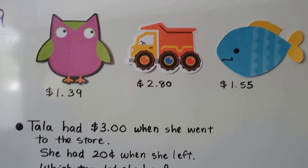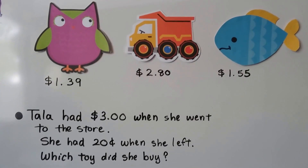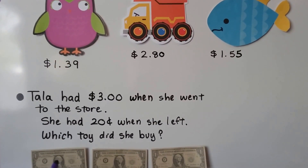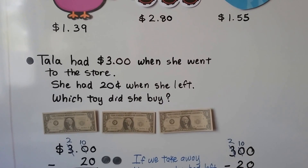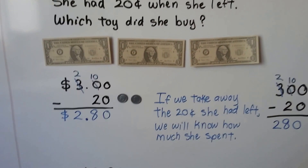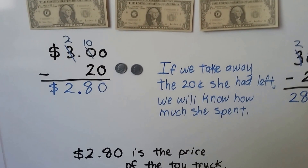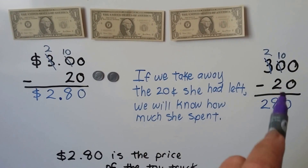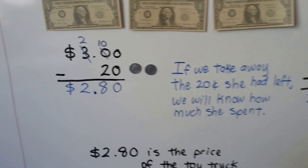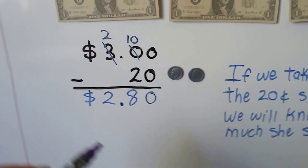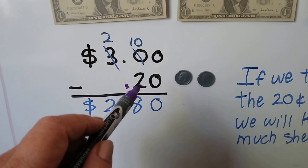Tala had three dollars when she went to the store and she had 20 cents when she left. Which toy did she buy? She had three one-dollar bills when she went to the store, but when she left she only had two dimes — 20 cents. We can do subtraction: if we take away the 20 cents from the three dollars, we'll know how much she spent. Subtracting money is the same as subtracting regular numbers; we just have a dollar sign and a decimal point to separate the dollars and cents.